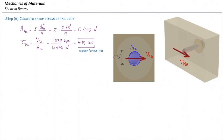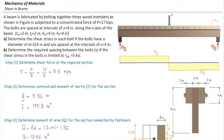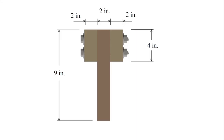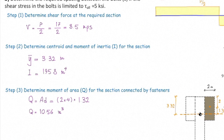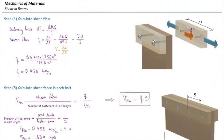Now consider the case where instead of one bolt we have two bolts connecting the two shapes together. Going through the steps: steps 1, 2, 3, and 4 do not change — the total force to be transferred depends on the area of the segment, which we are not changing. There is a change in step 5, because the number of fasteners changes.